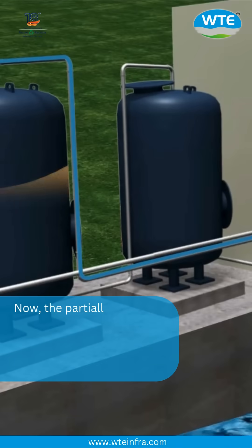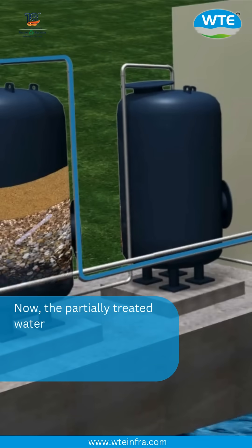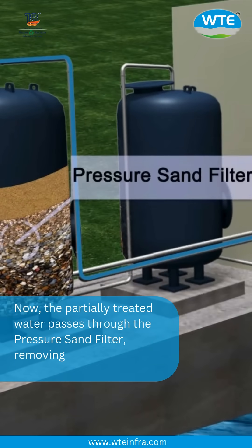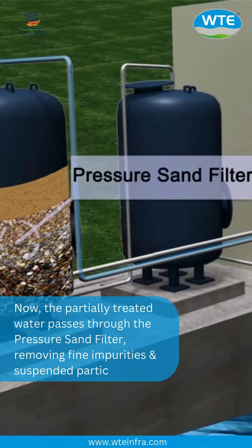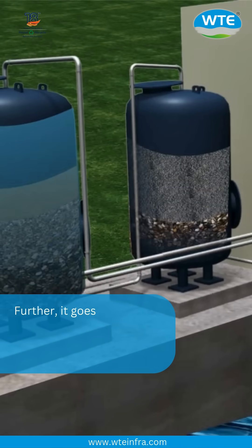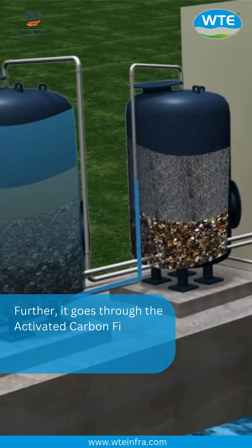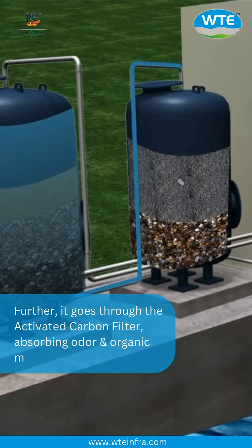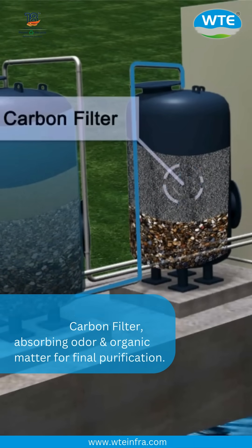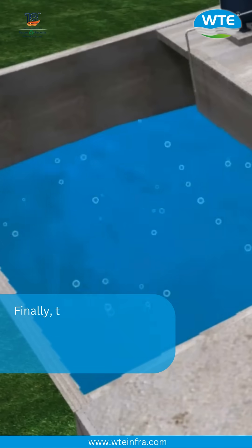Now, the partially treated water passes through the pressure sand filter, removing fine impurities and suspended particles. Further, it goes through the activated carbon filter, absorbing odor and organic matter for final purification.